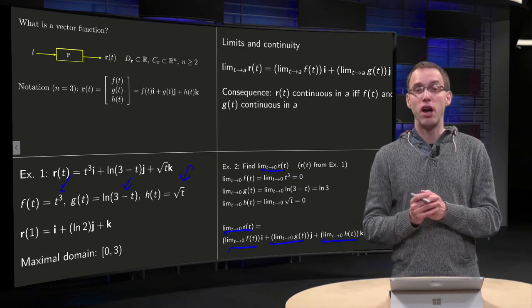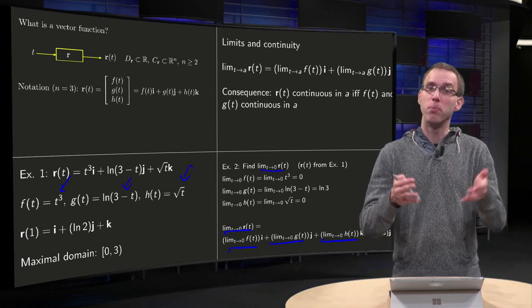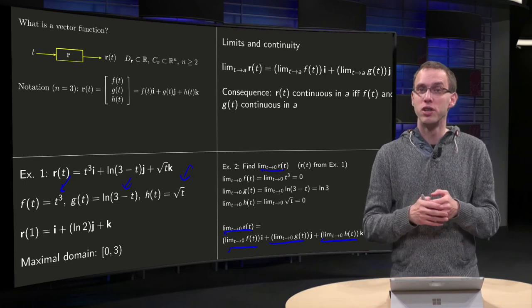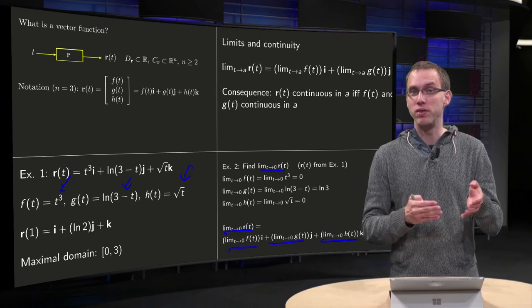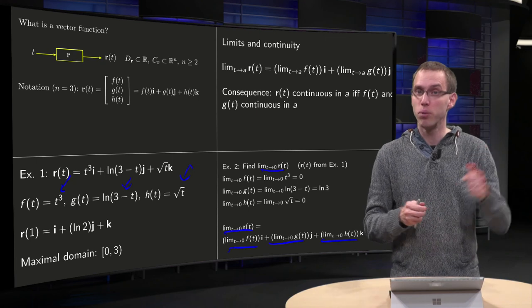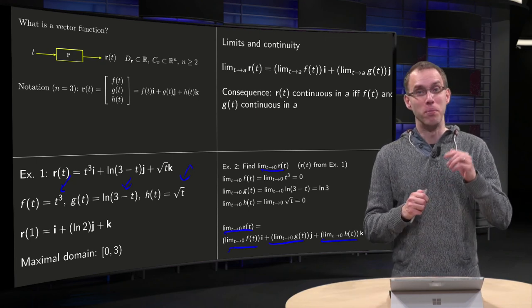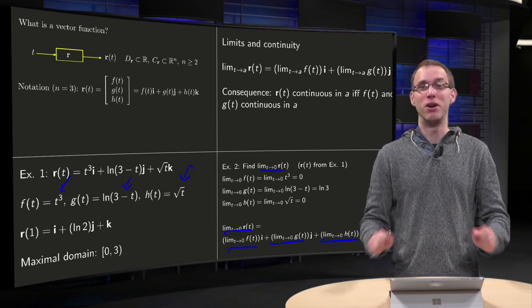So as you see, vector functions for the moment just behave like a number of normal functions, so what is the difference between a vector function from R to R³ and say three normal functions? For now, there is no difference, but this was only the first video on this subject.